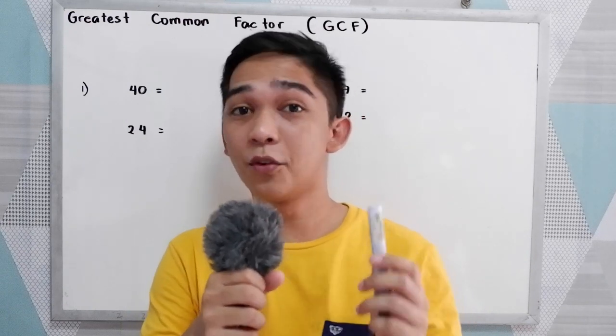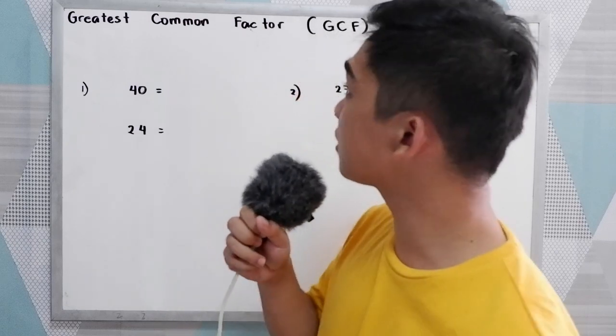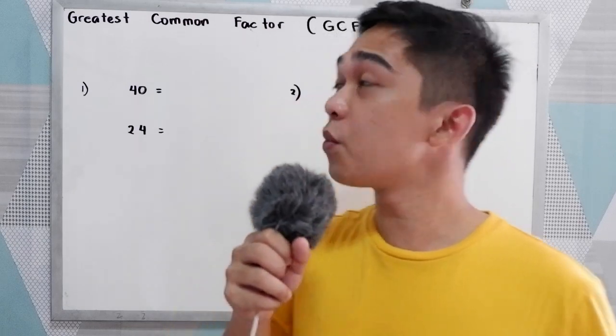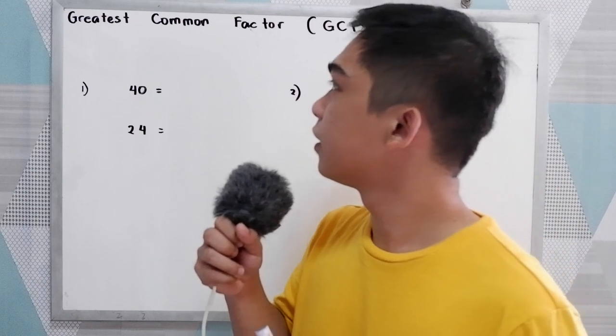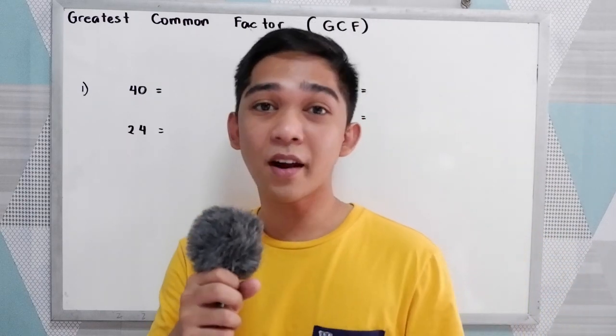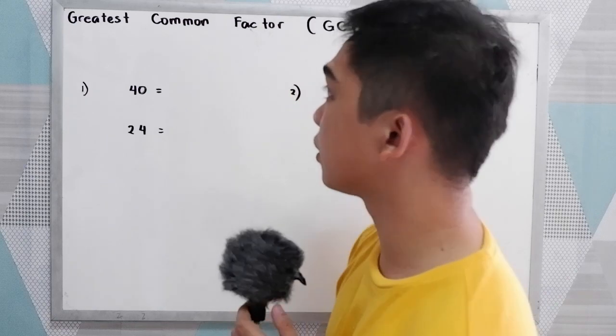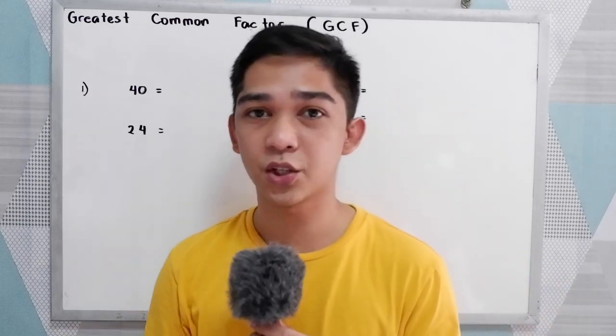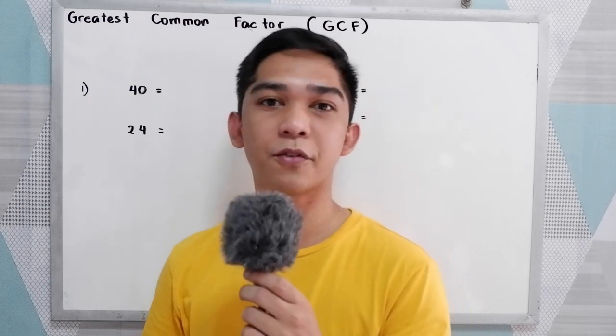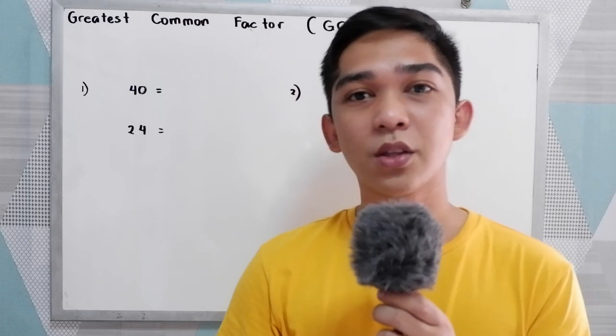Good day everyone. Today I will be discussing the finding of the greatest common factor, or what we call the GCF. In greatest common factor, we're going to find the largest common factor of the given two numbers. In this lesson, we're going to use prime factorization — either the decomposition method, or the factor tree method — or you can list all the factors of the given numbers.